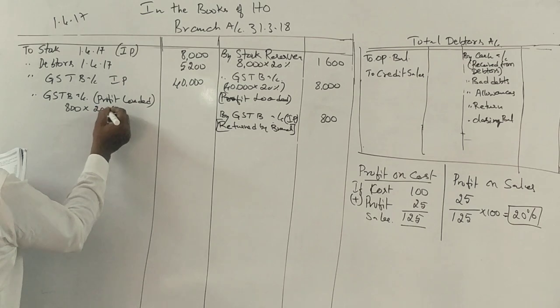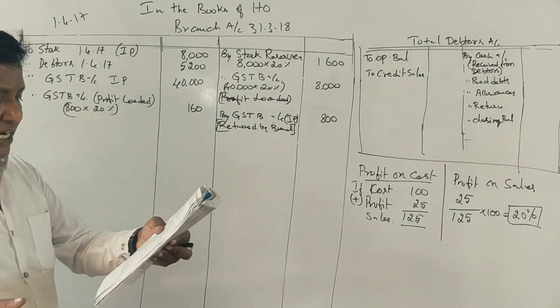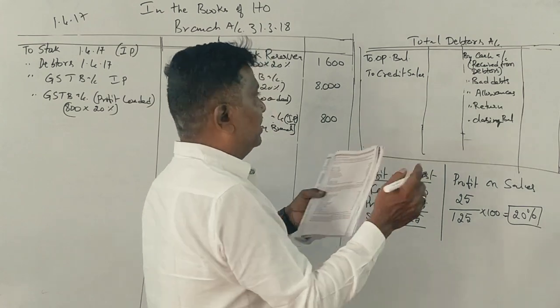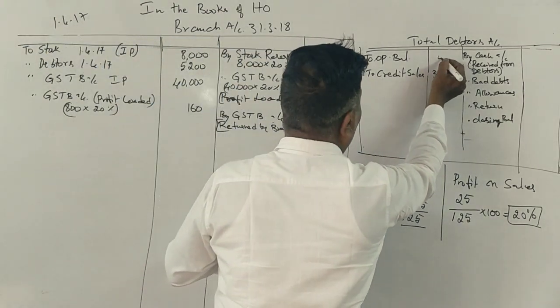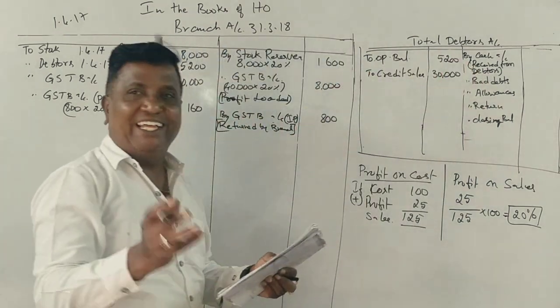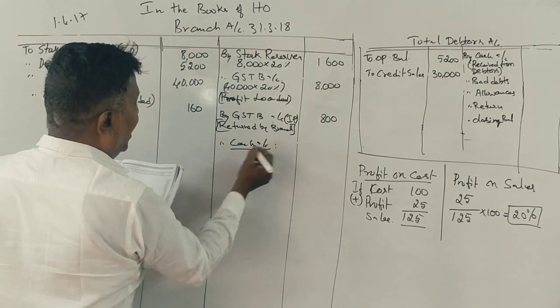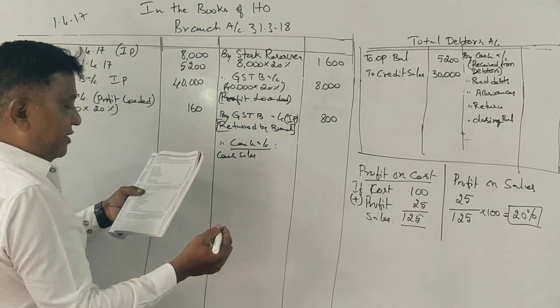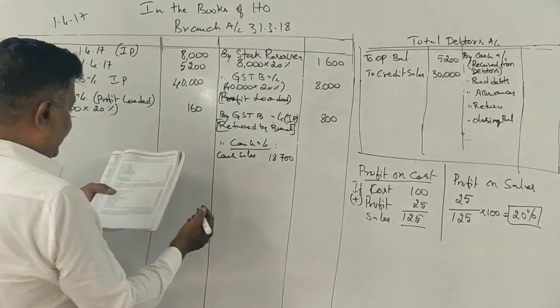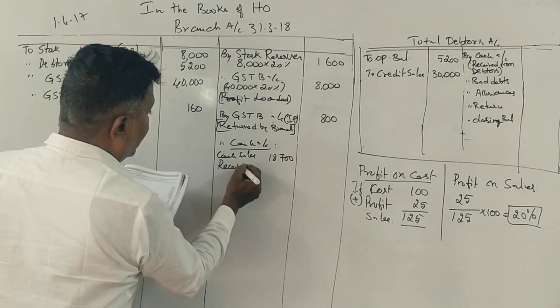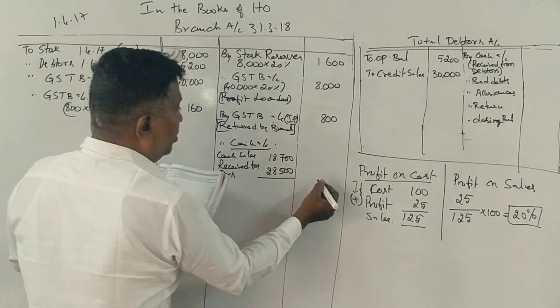Credit sales are 30,000, which goes to the debtors account. Cash sales are 18,700, which goes to the cash account. Cash received from debtors is 28,500. The total receipts are 47,200.